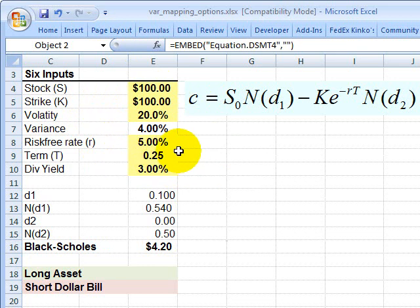So here, let's look at how we could map a nonlinear derivative, specifically a European call option. This is the way illustrated in Jorion. It's not the only way to map a European call option. But in this case, to describe the option, we want the six inputs that are common to pretty much any option pricing model we use.